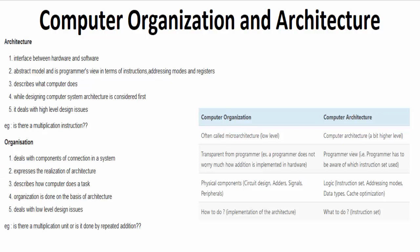Computer organization deals with the operational view of the computer, whereas computer architecture deals with the structural view of the system. It has physical components like circuit design, adders, signals, and peripherals.